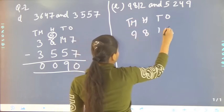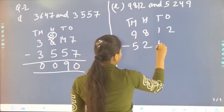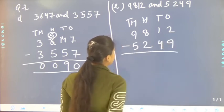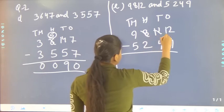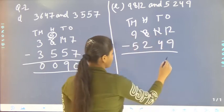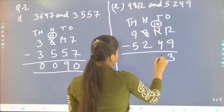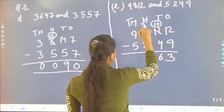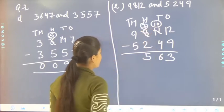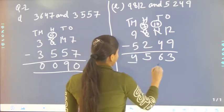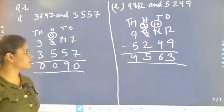9,812 minus 5,249 — we have to take a borrow from 8. It will be 12. 12 minus 9, it will be 3. 10 minus 4, it will be 6. And 7 minus 2, it will be 5. And 9 minus 5, it will be 4. That is 4,563.